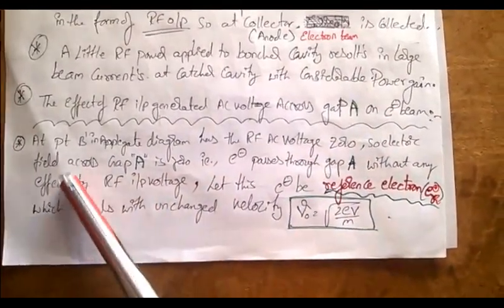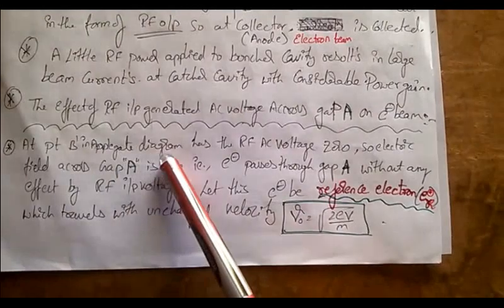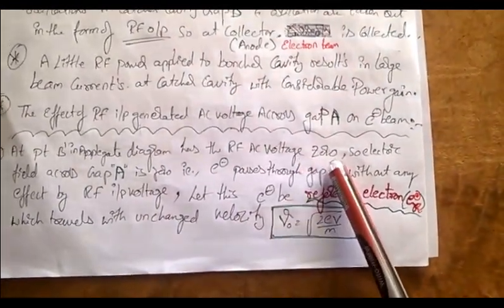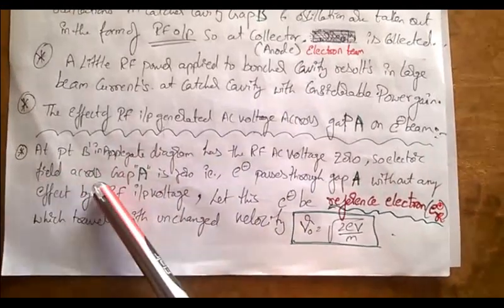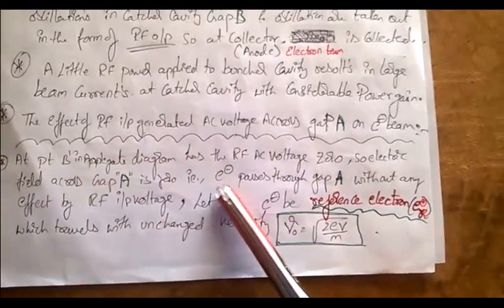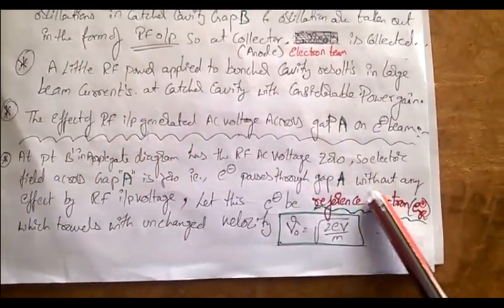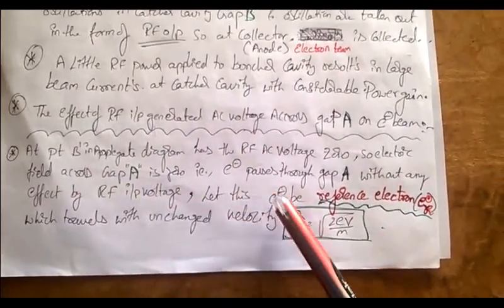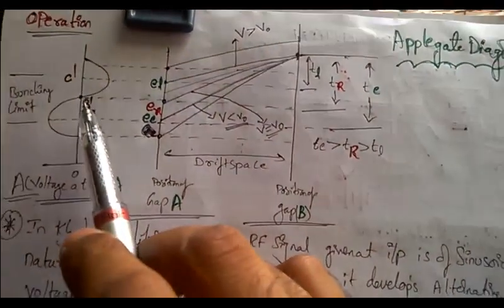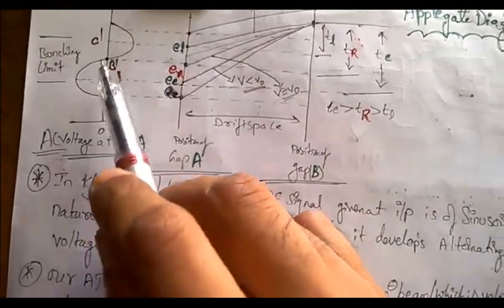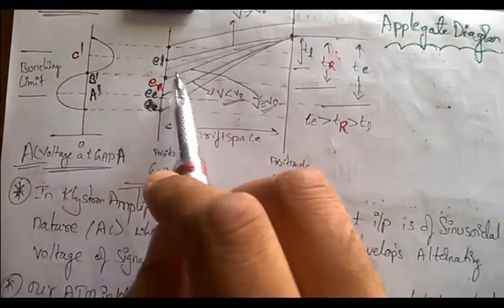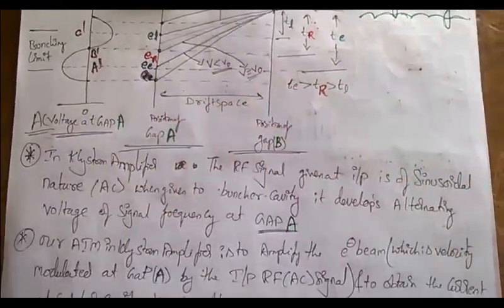At point B-dash in the applicate diagram, the RF AC voltage is zero. Therefore the electric field across the gap is zero, meaning the electron passes through gap A without any effect from the input voltage. This electron is designated as the reference electron.